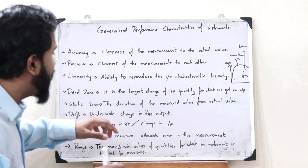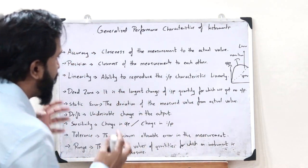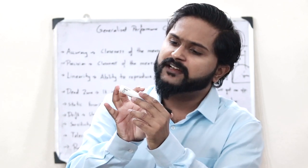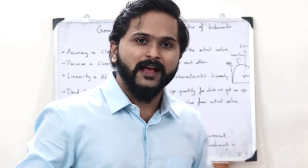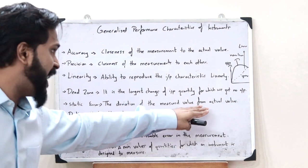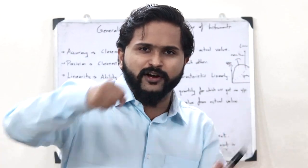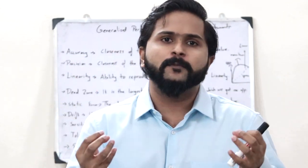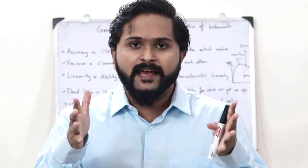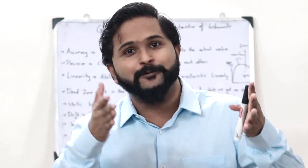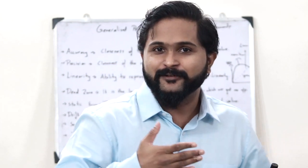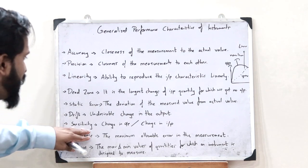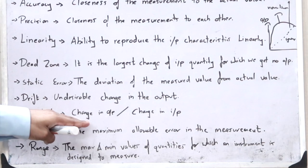Static error is simply the deviation of the measured value from the actual value. For example, if I'm measuring a pen that is 10 centimeters long but I measure it as 12 centimeters, there is a static error of 2 centimeters. Next, drift refers to an undesirable change in the output — just like a car drifting when you turn left but the car goes right. Sensitivity is simply the ratio of the change in output divided by the change in input.